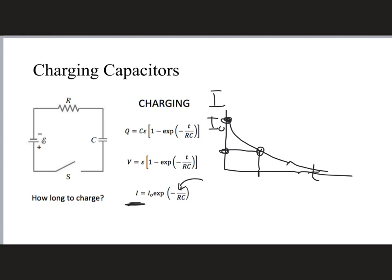The expressions for Q and V are a bit more complicated. The factor out front — E, the battery voltage — reflects that the capacitor voltage eventually equals the battery voltage. For the charge, the maximum value is CE, since Q = CV is the fundamental capacitor equation. The middle part of the expression describes the behavior between the starting point and the ending point.